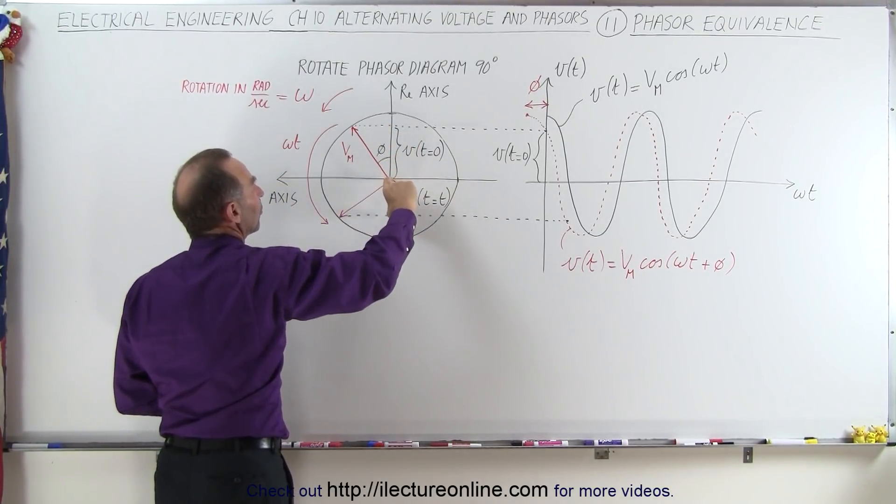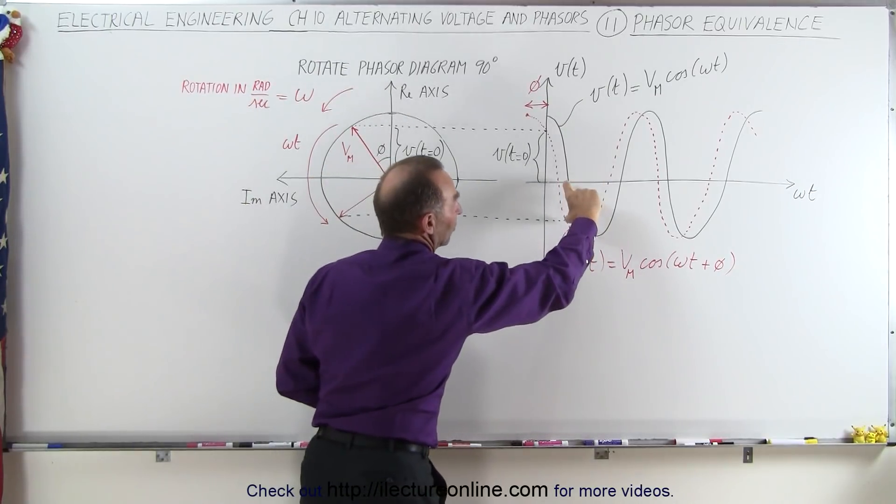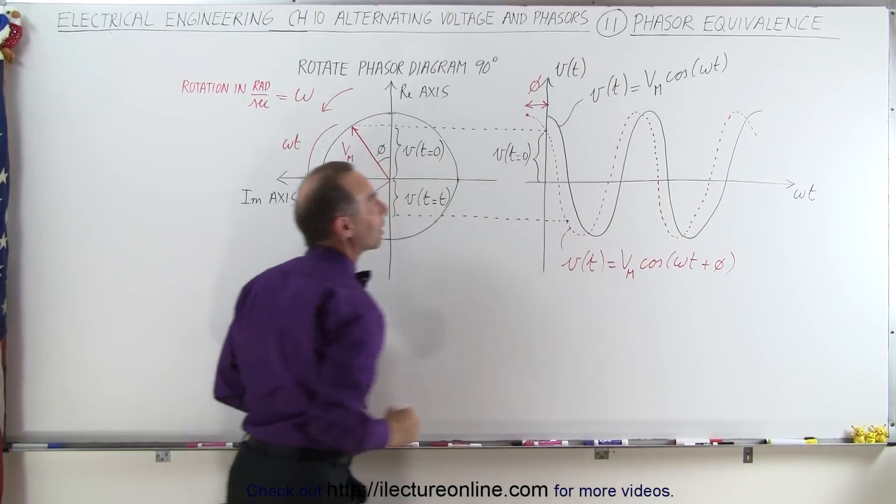So the phasor simply shifted over this way, and the translation of the vector onto the real axis is what represents the real voltage at any point in time. This is the voltage at t equals zero, this is the voltage at t equals t, so this would be a negative voltage that reflects the negative voltage right here that we have on the sinusoidal diagram.